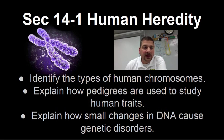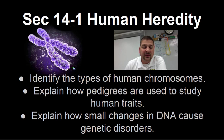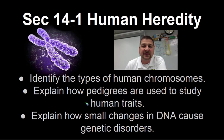Hammy here. Today we're going to discuss section 14.1 out of our biology one book called Human Heredity. In this section we hope to accomplish a few objectives: identify the types of human chromosomes, the different kinds and how they're arranged and sizes; explain how scientists use pedigrees to study human traits, family histories; and start to take a look at some of the diseases that occur when the DNA is not quite right or the chromosomes are messed up.